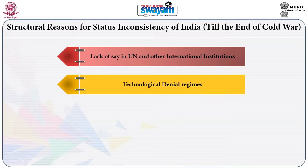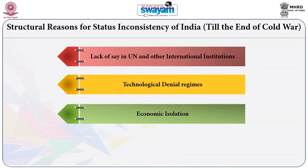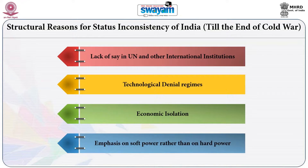There were also technological denial regimes at the international level operating against the interests of India. Another important aspect contributing to the status inconsistency was a kind of economic isolation — the economic models that India followed made it isolated from the international economic system. Another important reason for the status inconsistency was an overt emphasis on soft power rather than on hard power.